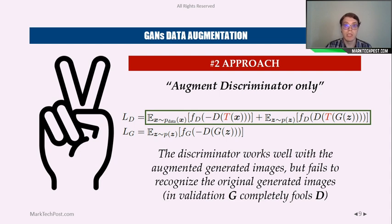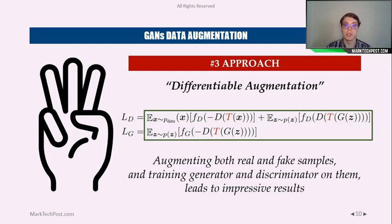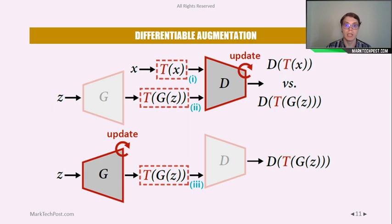This can be seen in validation when the generator completely fools the discriminator. But this paper proposes a third approach — differentiable augmentation — in which we modify both loss functions: the discriminator loss function and the generator loss function. So we augment both real and fake samples, and this leads to an impressive result.